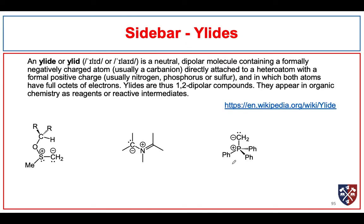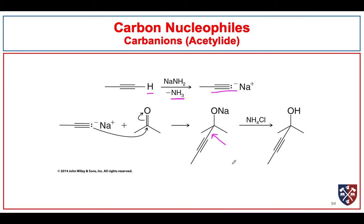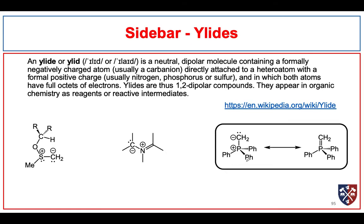We're going to talk about phosphorus ylids — specifically this phosphorus ylid, which is also known as a Wittig reagent. Notice we have a positive charge on the phosphorus and a negative charge on the carbon. We can draw a resonance structure which just has a phosphorus-carbon double bond, but the actual compound has a lot of negative charge character on carbon and a lot of positive charge character on phosphorus.